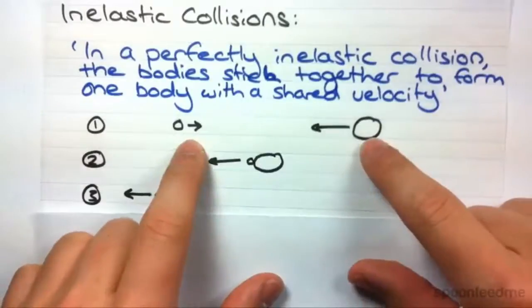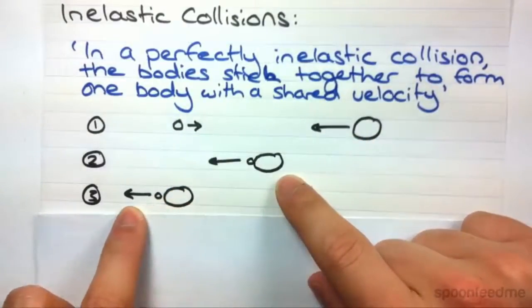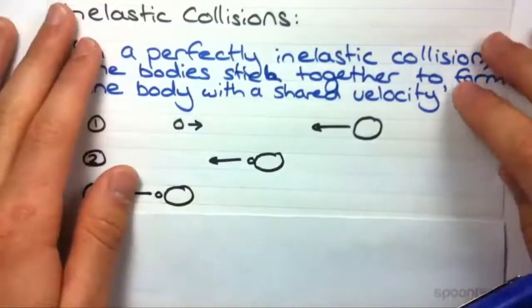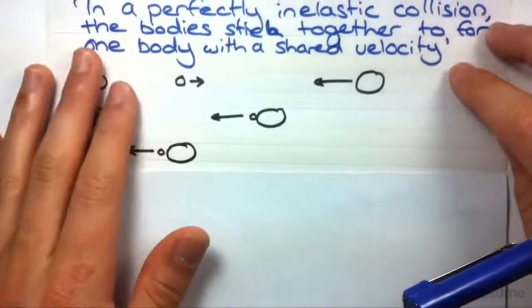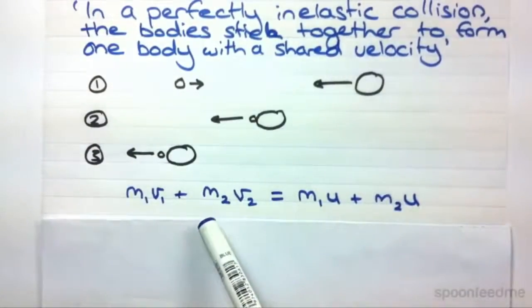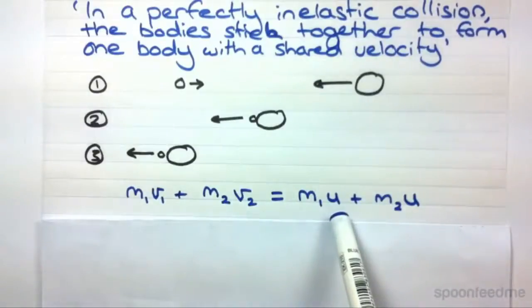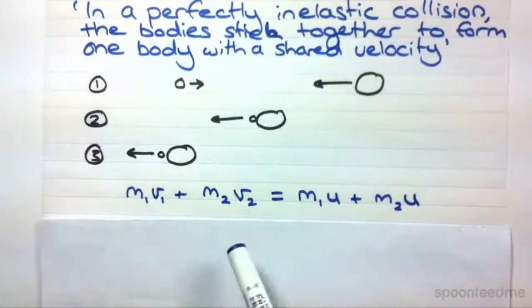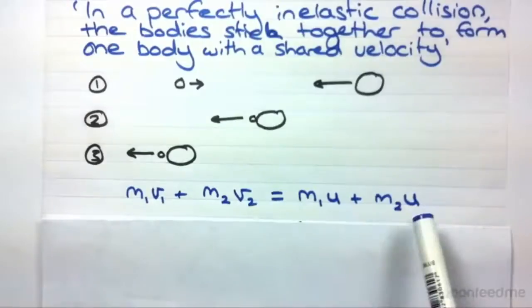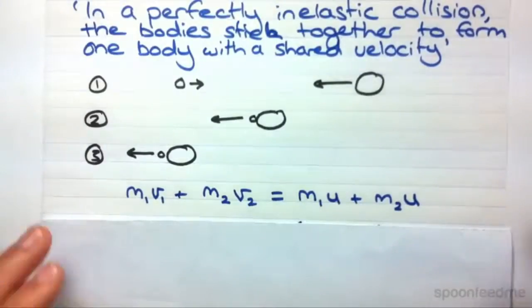If you imagine these two balls moving towards each other, they collide and then they move off with a shared velocity in this direction. Now what that means is that equation is slightly different. So we've got M1V1 plus M2V2. You'll sometimes see final velocity written as U or even initial velocity, but in this case the final velocities are the same because they share one body and they share that velocity.